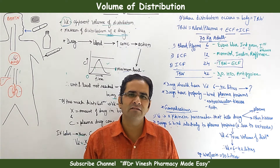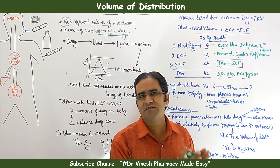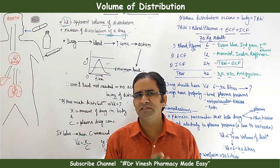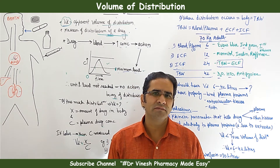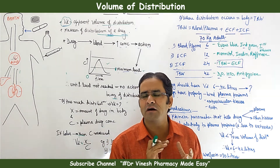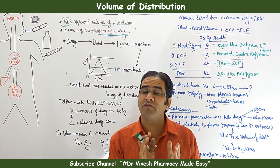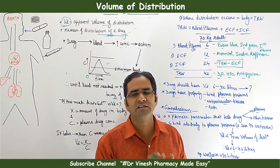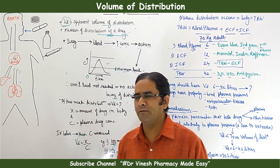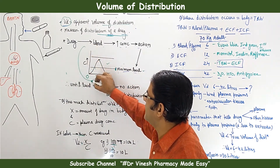Volume of distribution is very important because wherever the dose of a drug is decided, this factor is considered. It affects the pharmacological effect, the onset of action, and also the half-life of the drug. Therefore, the dose of drug is also affected.